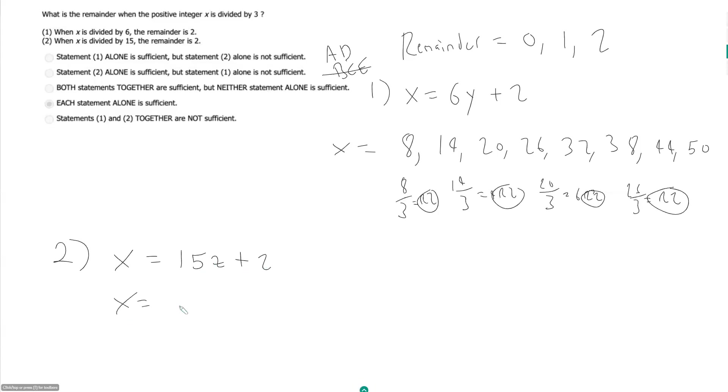x can be if z is equal to 1, 17; z is equal to 2, 32. So we're adding 15 every time. x can equal 17, 32, 47, 62, 77, 92, 107. I think that's enough for here.